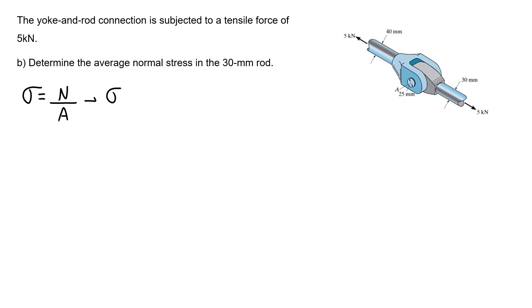We have the same force: 5000 N over π/4 times (30 times 10⁻³)² meters squared. The average normal stress for the 30 mm rod is 7.07 times 10⁶ Pascals.